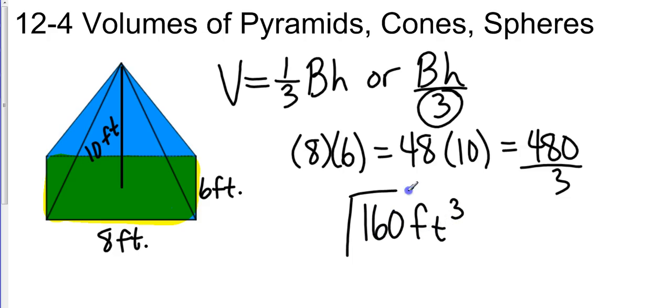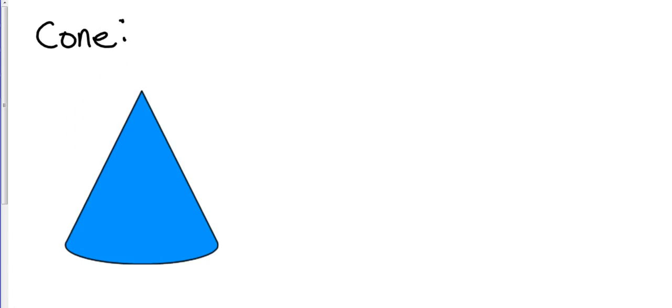Okay, so again, take the area of the base, then multiply it by the height, and then take that number and divide it by 3, and that gives you 160 feet cubed. Okay, now I have a cone.